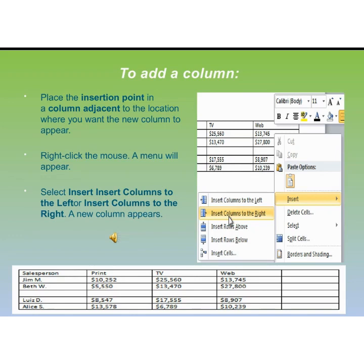Adding a column in a table: Place the insertion point in a column adjacent to the location where you want the new column to appear. Right-click the mouse — a menu will appear. Select Insert Column to the Left or Insert Column to the Right, and a new column appears.